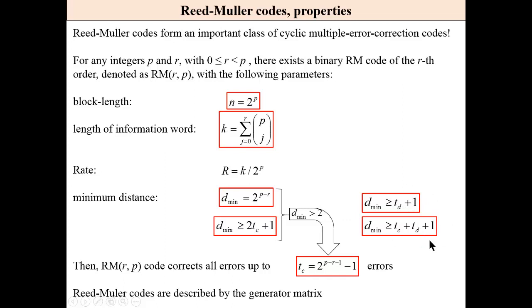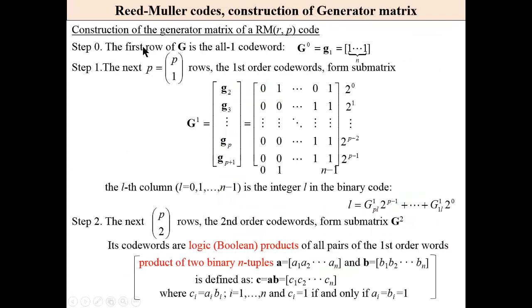Reed-Muller codes are described by the generator matrix. How is this matrix constructed? The first row is the all-one codeword. The next P rows, the first order codewords, form the following submatrix. The L-th column of this submatrix, L is from 0 to N minus 1, the last column N minus 1.